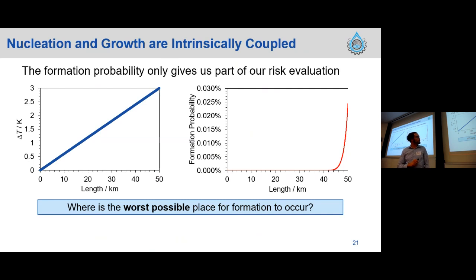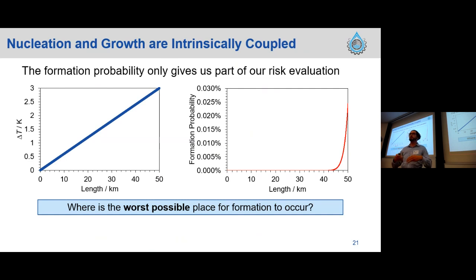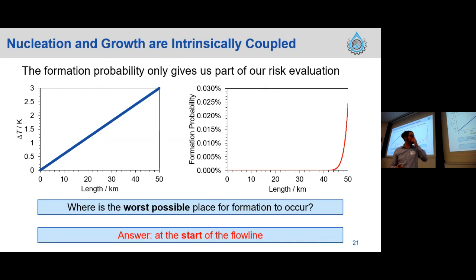What we want to do next is start looking at how bad it would actually be if hydrate forms. We've talked about formation likelihood, but that doesn't tell us how bad the problem will be. We need to look at the intrinsic coupling of nucleation and growth. You might think the worst place for hydrate to form is where subcooling is highest — because growth rate will be high — but actually the worst place is at the start of the flow line, because if it forms there it can grow over the entirety of the system length.